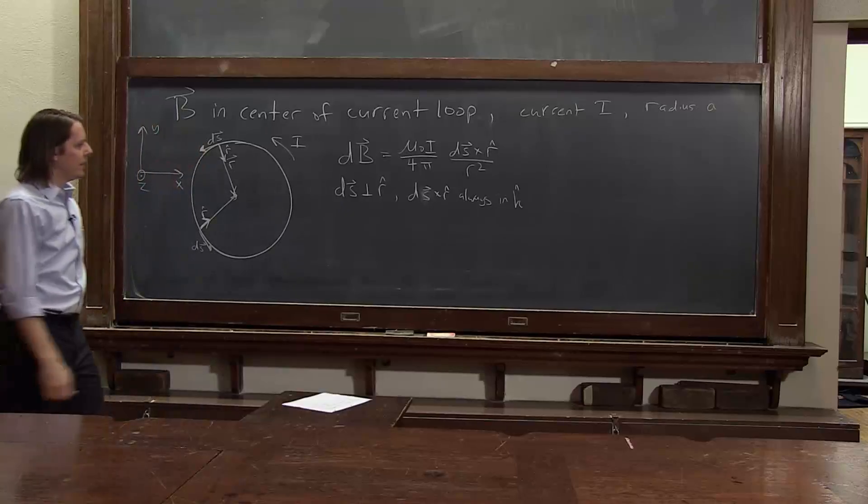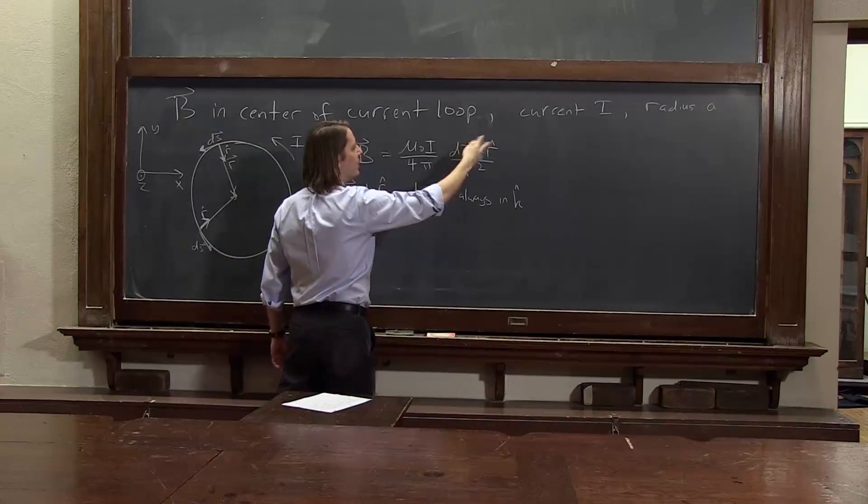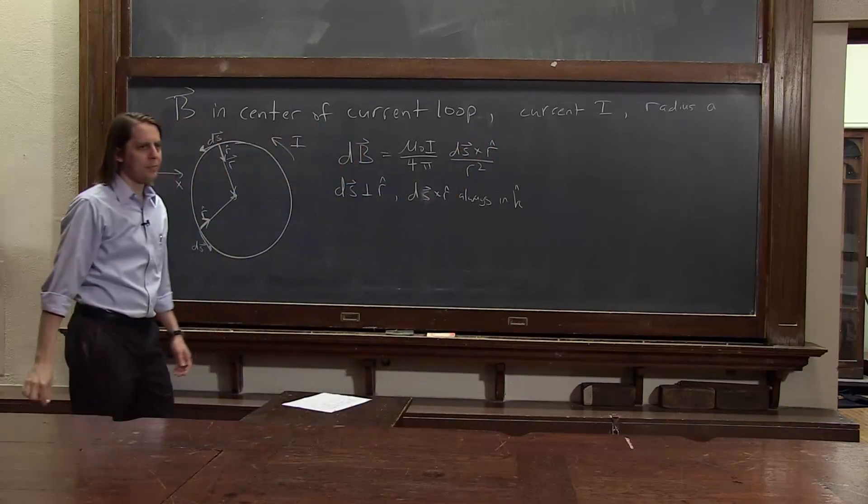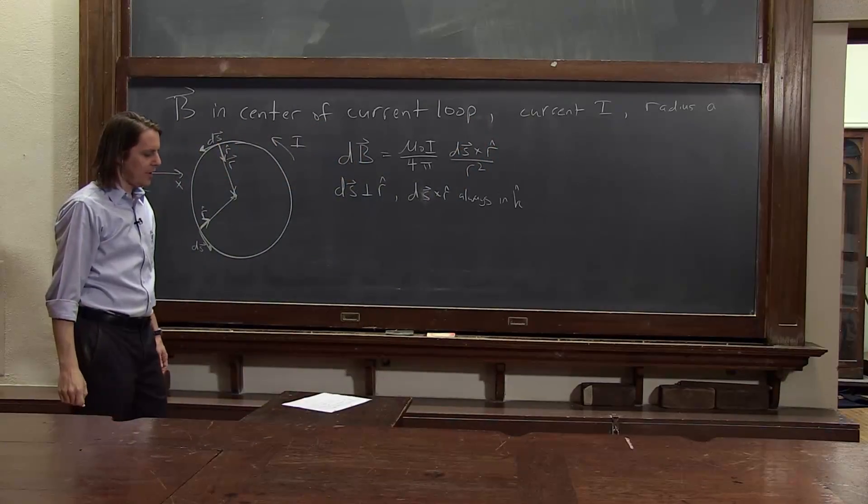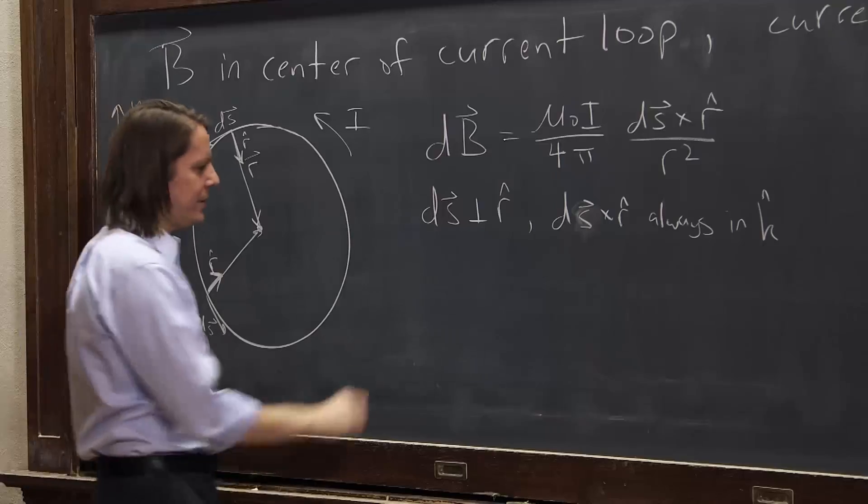So that's what we know. So if they're perpendicular, then the angle between them is 90 degrees, and sine of 90 is 1. So it's really down to just the magnitudes. So let's see what that does. Let's write, then, B is the integral.